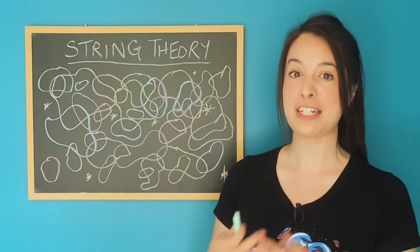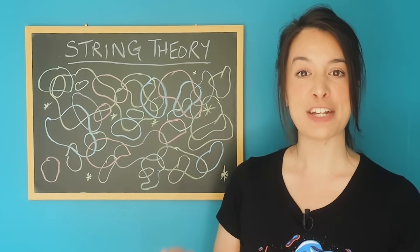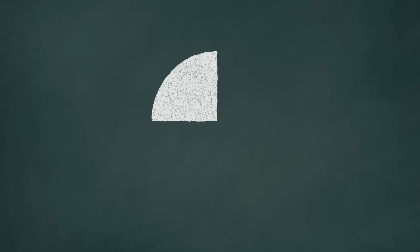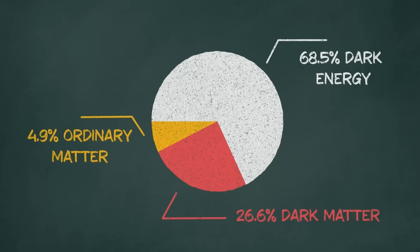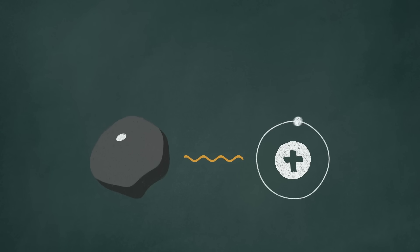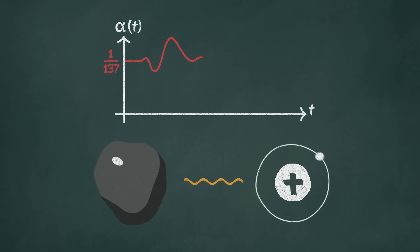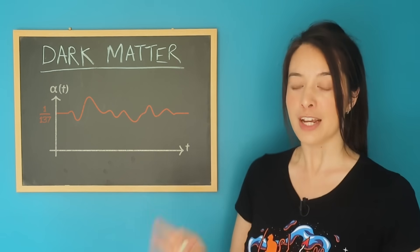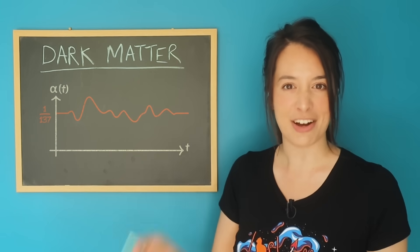And the final theory that the constants might be changing comes from the study of dark matter. Dark matter is the mysterious matter that accounts for over 20% of the universe's mass, yet we know almost nothing about it. Some physicists think that dark matter interacts very weakly with an atom's electrons or nucleus, causing alpha to drift or oscillate by some extremely tiny amount. If we observe this drift, it could help us understand dark matter.